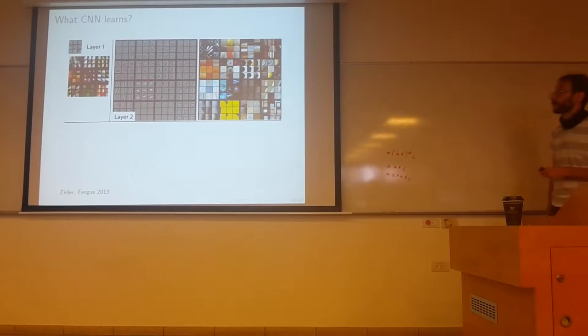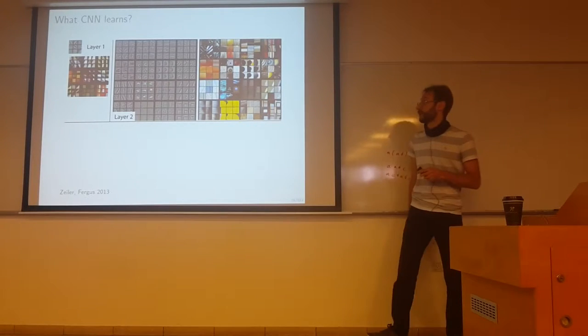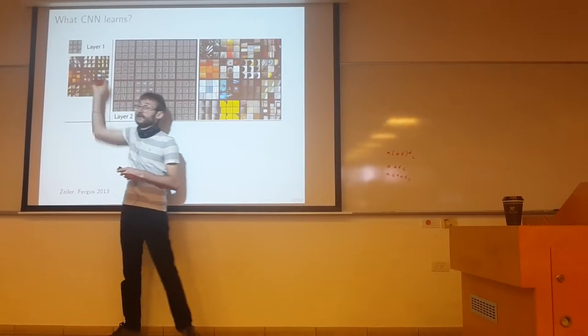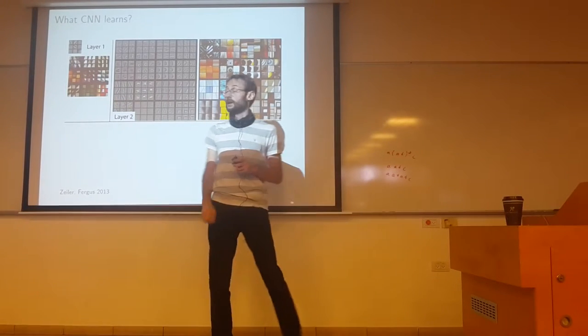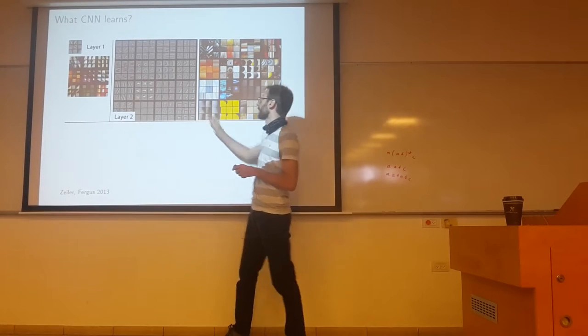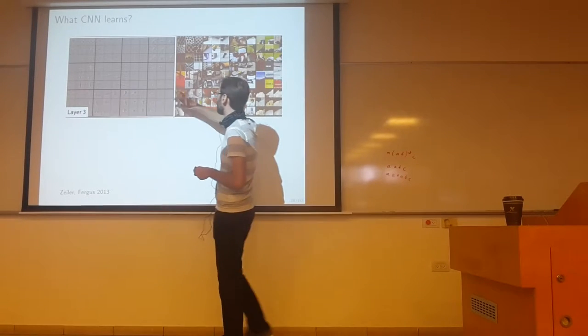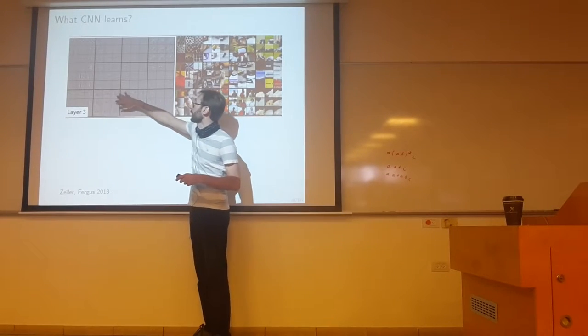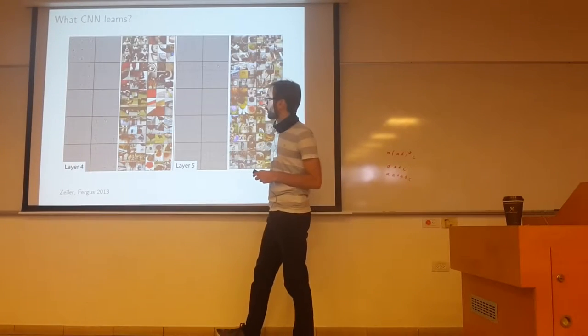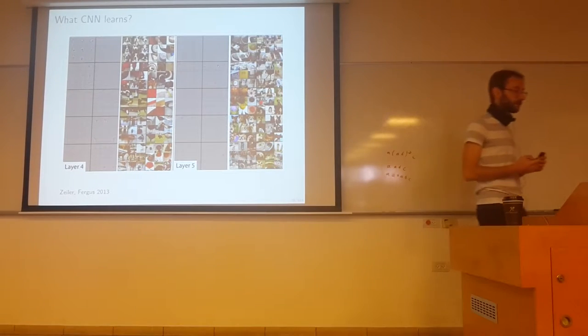So just an example, if you see what the neural net learns on image classification applications. So the first layer contains very simple features, very simple filters like edges and corners. The second layer will contain some more complicated structures like corners. The third layer will already contain some more complicated structures like you can see here, some human faces. For example, the fourth layer and the fifth layer, basically the deeper you go, the more complex features become.